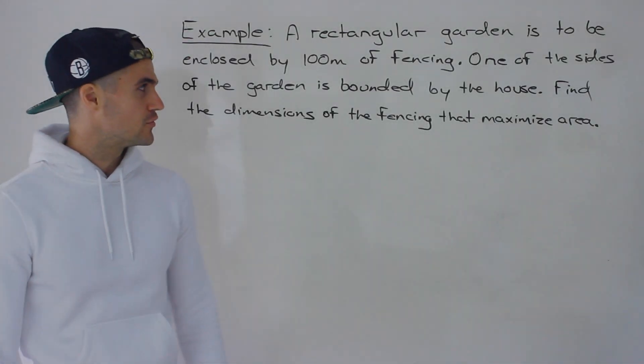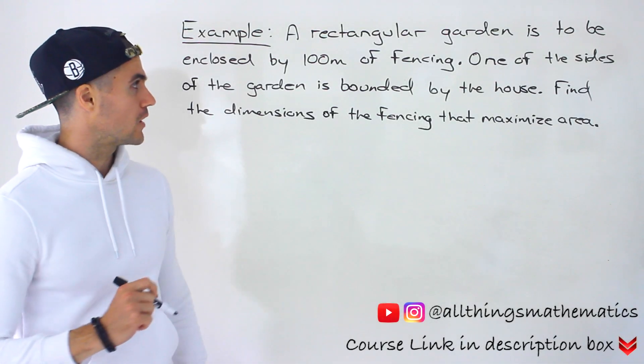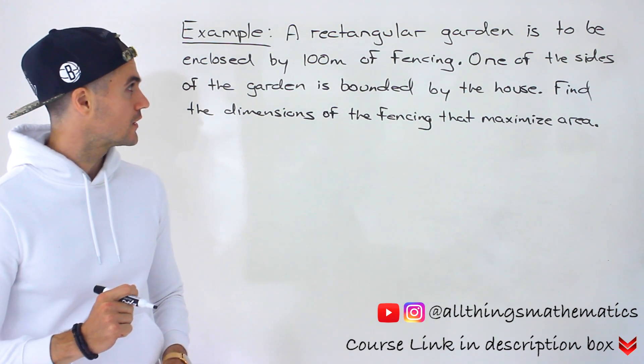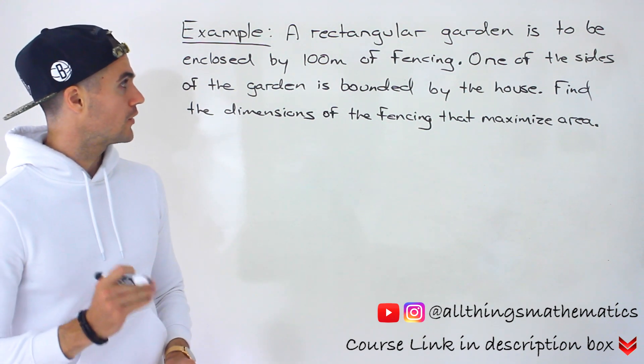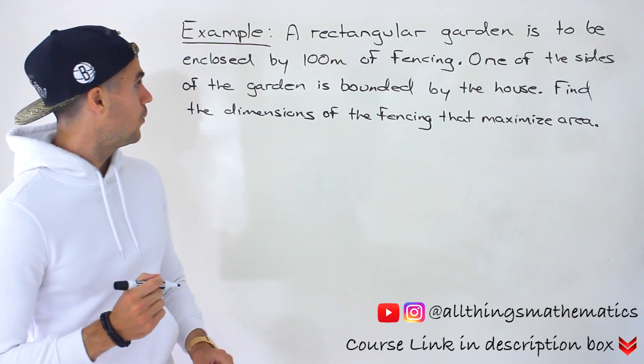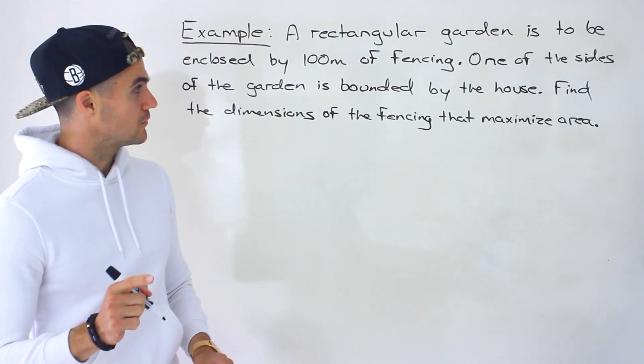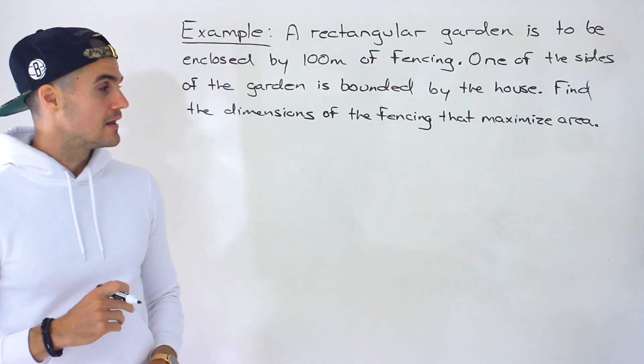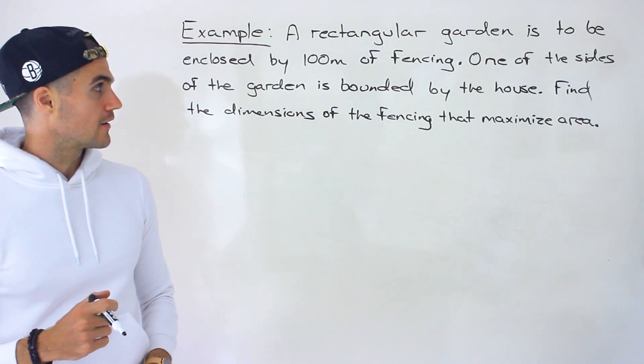Welcome back everyone. Patrick here. Moving on to another word problem dealing with quadratics. It's going to be another max-min word problem. So a rectangular garden is to be enclosed by 100 meters of fencing. One of the sides of the garden is bounded by the house, and we have to find the dimensions of the fencing that's going to maximize the area.